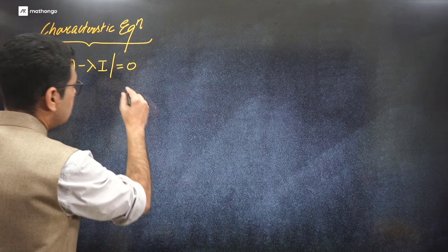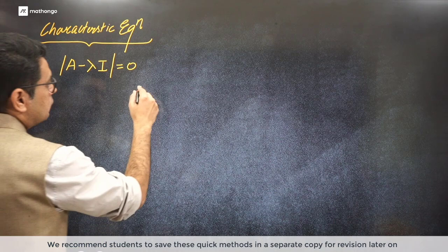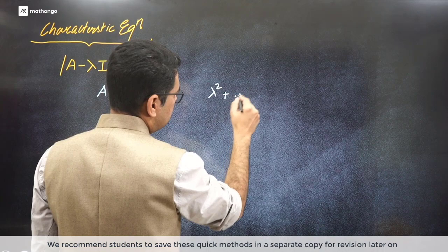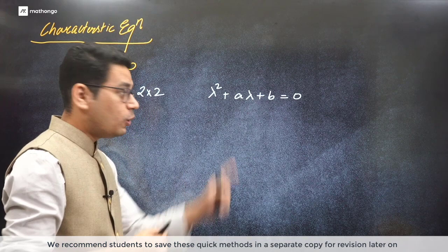So understand this: if you are having a 2 cross 2 matrix, what result will you get? It will be quadratic in nature. So the equation will be like lambda square plus A times lambda plus B, where A and B can be anything - we'll talk about what they are, and that's where the trick is hidden.